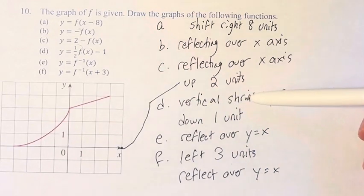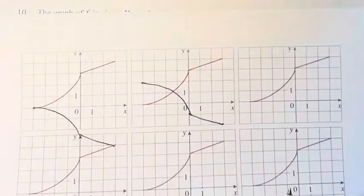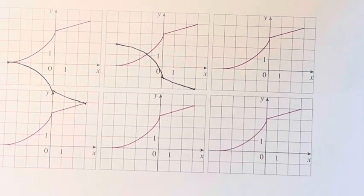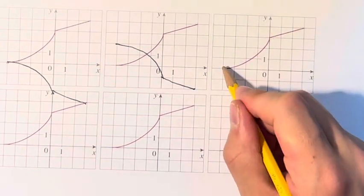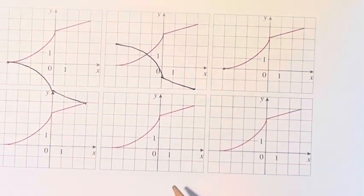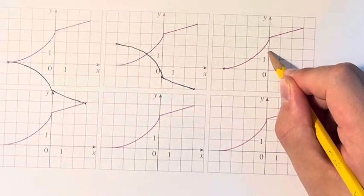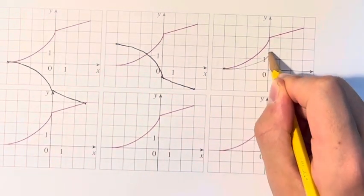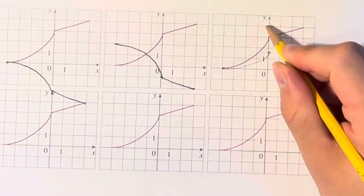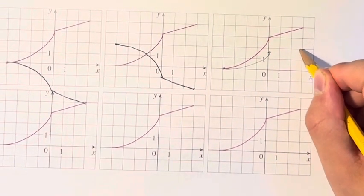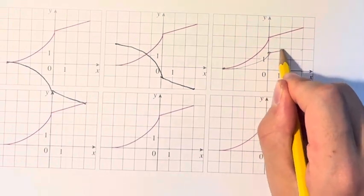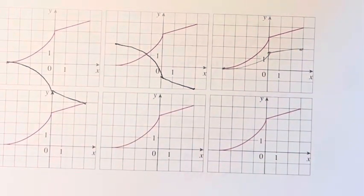For part D, we're vertically shrinking by a factor of 2, and then moving down 1 unit. We have an intermediate step here. This point isn't changed because it's at 0, so 0 divided by 2 is 0. 3 divided by 2 is 1/2, so that becomes like that. And 4 divided by 2 becomes 2. That's the graph vertically shrunk by a factor of 2.